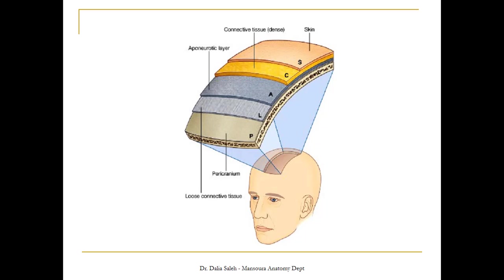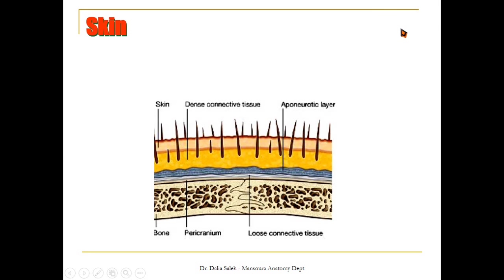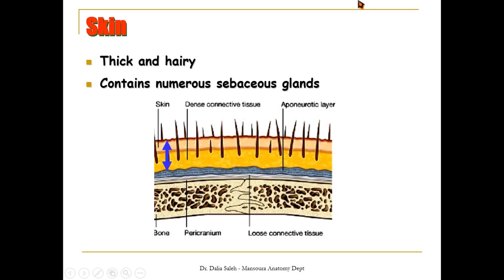The diagram can show you the layers. The superficial one is the skin. Deep to it lies the connective tissue layer. Deep to it lies the aponeurotic layer including the occipitofrontalis muscle. And deep to it lies the loose areolar tissue, and the last layer will be the pericranium close to the bone. For the skin, as you can see, it is thick and hairy. It contains numerous sebaceous glands, and you know that the sebaceous glands open into the hair follicles.